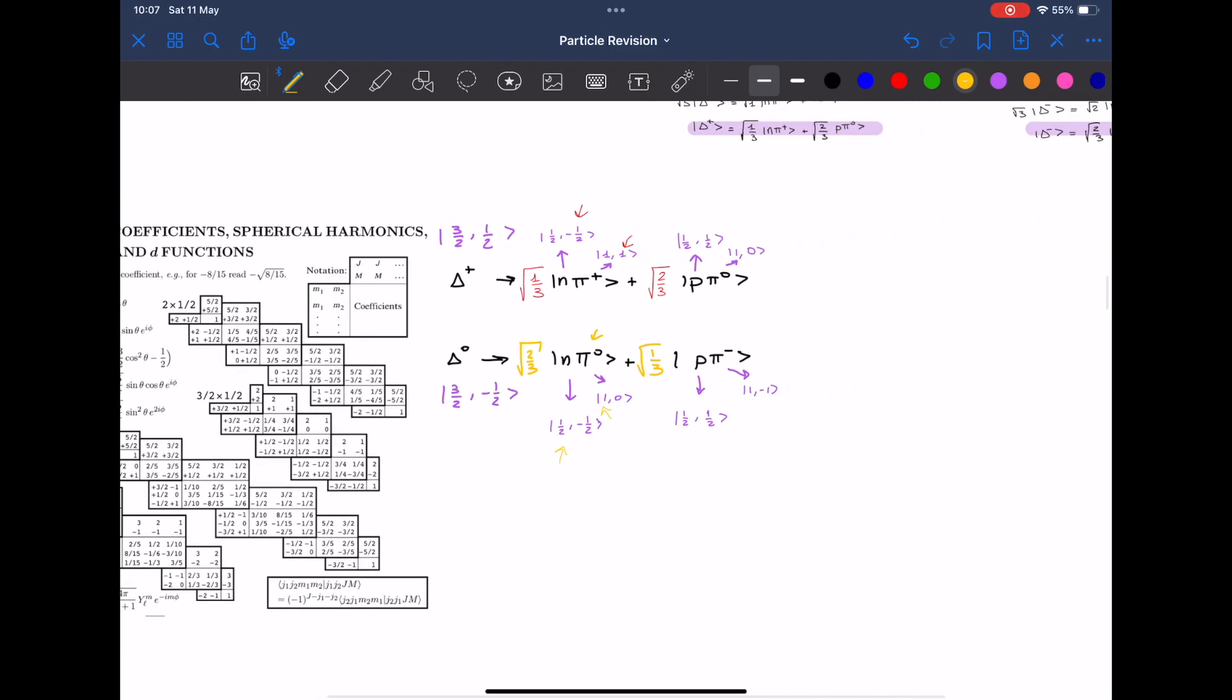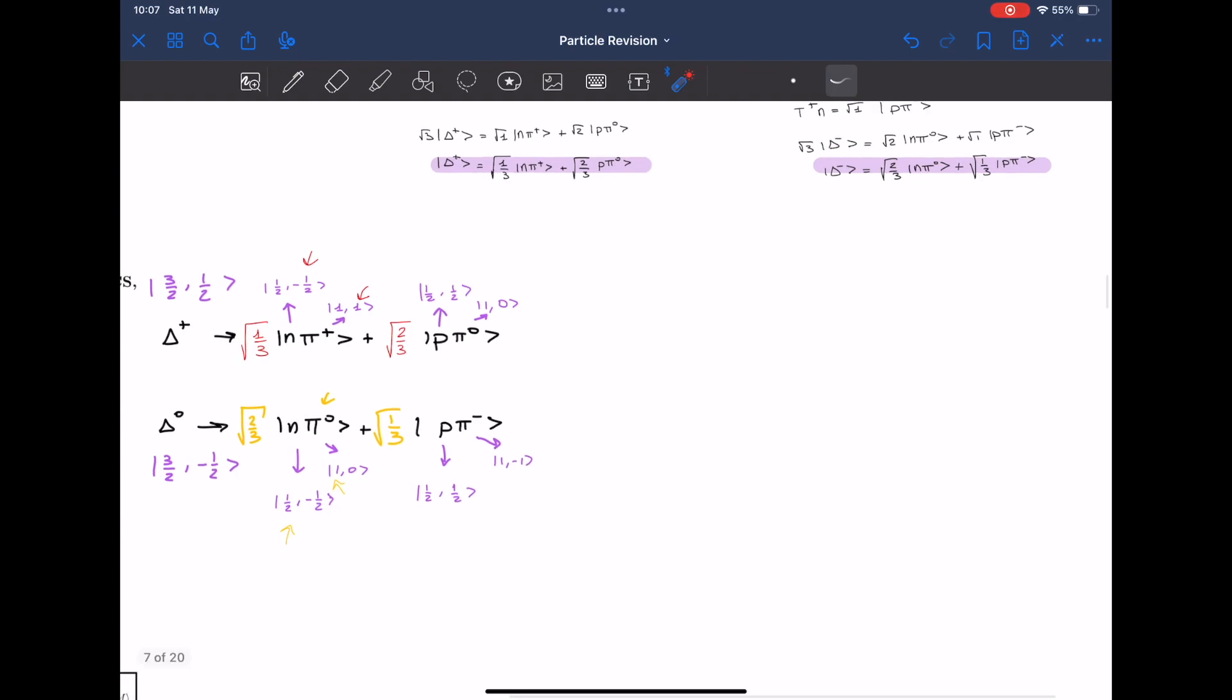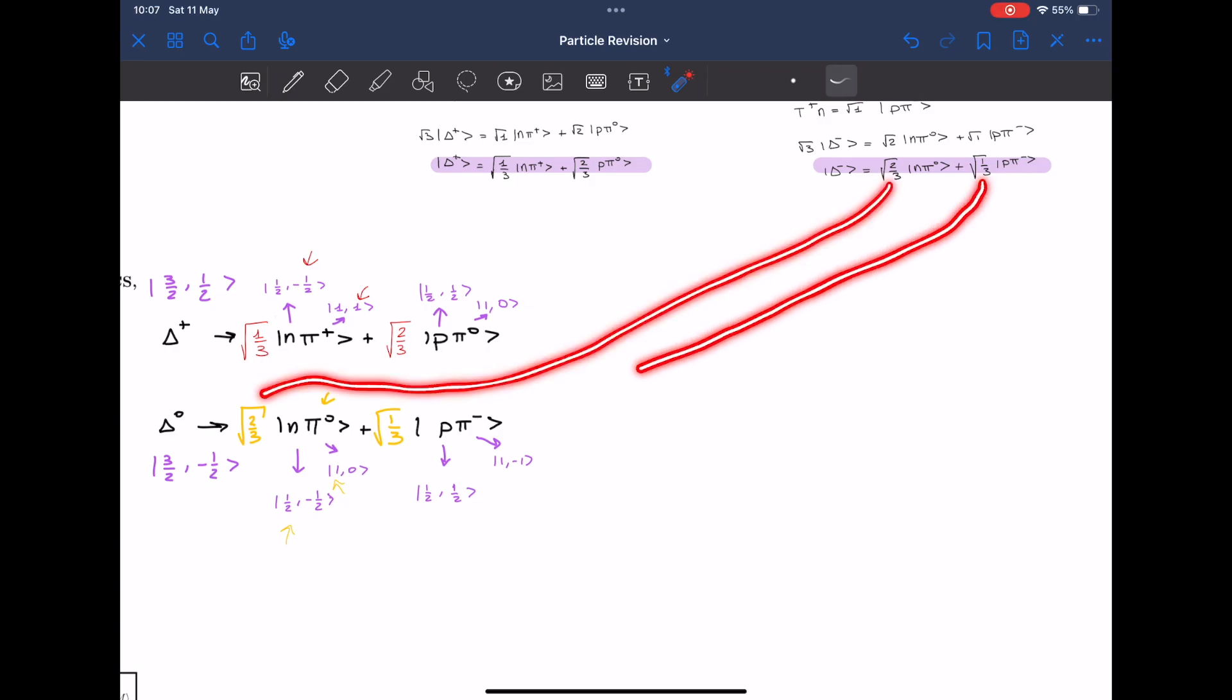Okay, let's now check our results and see if they match with our previous ones. So root of 1 over 3, root of 2 over 3, correct, and then root of 2 over 3, correct, and root of 1 over 3, correct. Perfect.